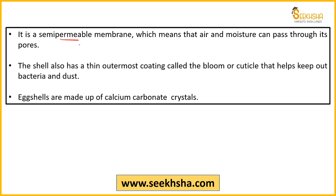The eggshell is semi-permeable — meaning air and moisture can pass through the shell. If it were completely enclosed, air and moisture would not pass and egg yolk development would not happen. Semi-permeable means required things like air and moisture will pass, and harmful things will be stopped by the shell. The outermost coating of the eggshell is called bloom or cuticle — this can also be a direct exam question. This outermost coating helps keep bacteria and dust away. Eggshells are ultimately made of calcium carbonate crystals — CaCO3.